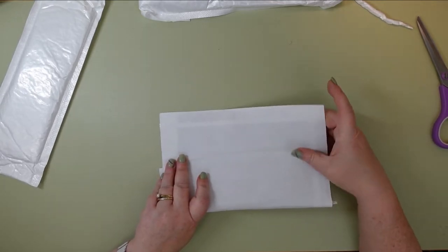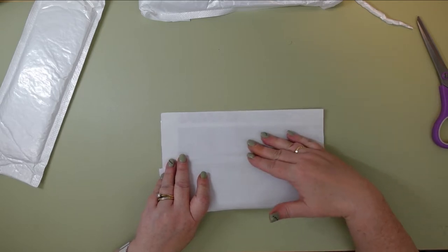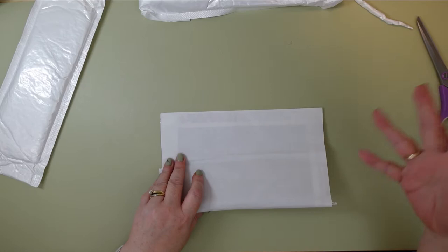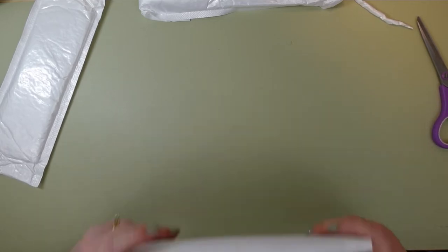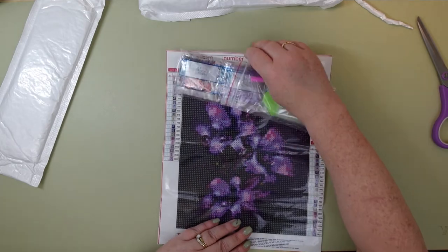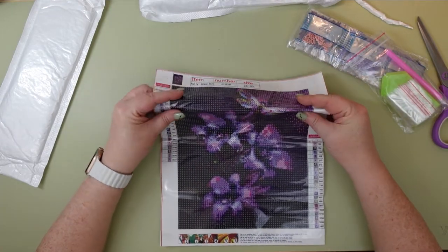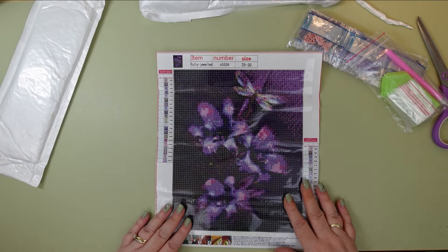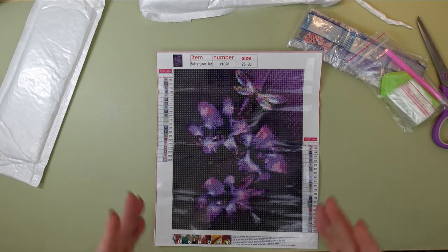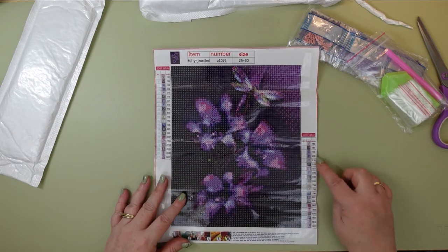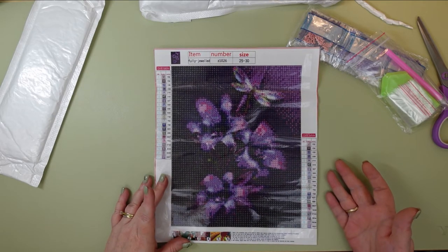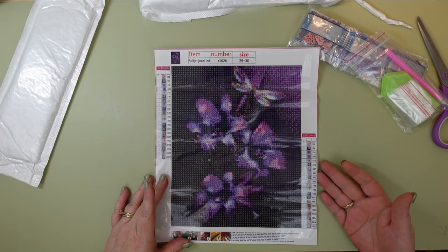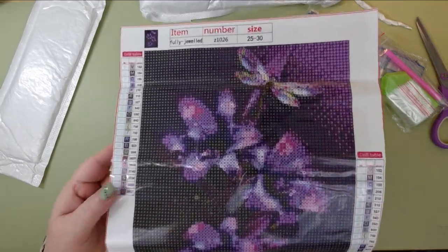So let's get this out of the package and take a look at this one. So this one, the canvas is, it is a stiffer canvas but it's, I don't know if the other ones just had coating from the other companies but this one actually does feel a tiny bit softer. And this one is called Morning Glory and it cost $3.99. It has 21 colors and I am looking at this and the drill field looks completely clear.